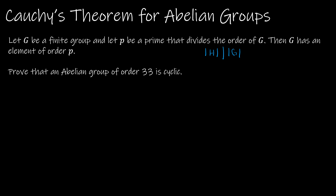For example, to prove an abelian group of order 33 is cyclic: by Cauchy's theorem, there exists an element A of order 3 (since 3 is prime and divides 33), and an element B of order 11 (since 11 is prime and divides 33). Then AB has order lcm(3,11)=33, which generates the entire group, so G must be cyclic.